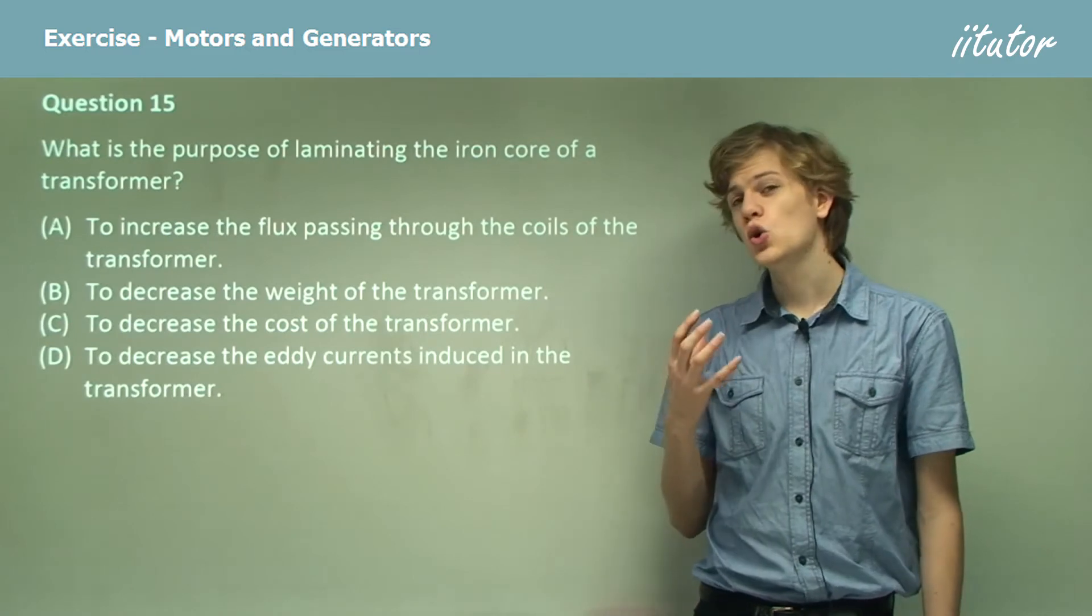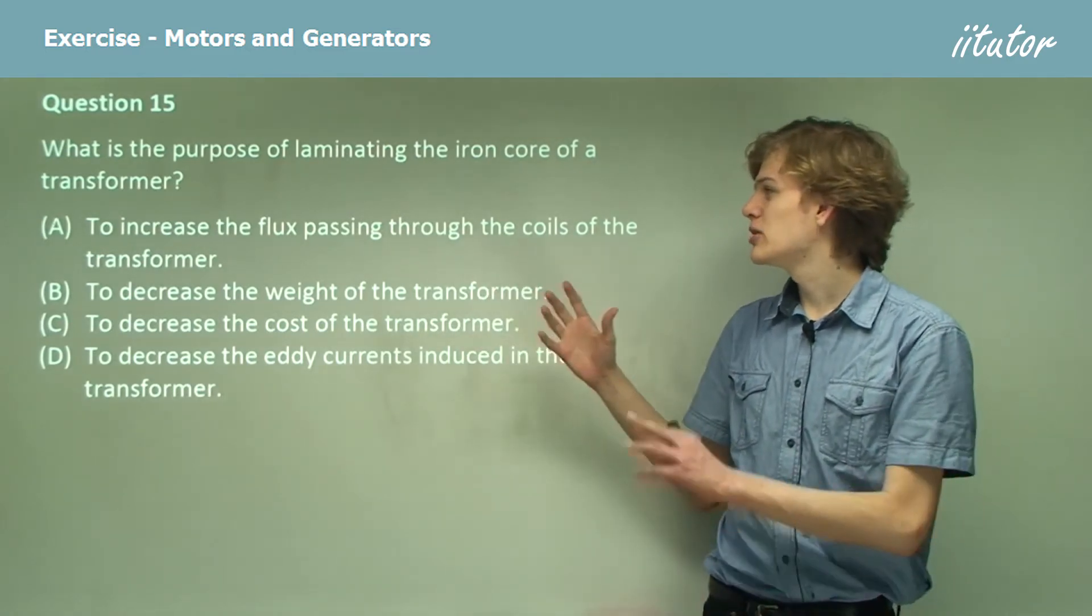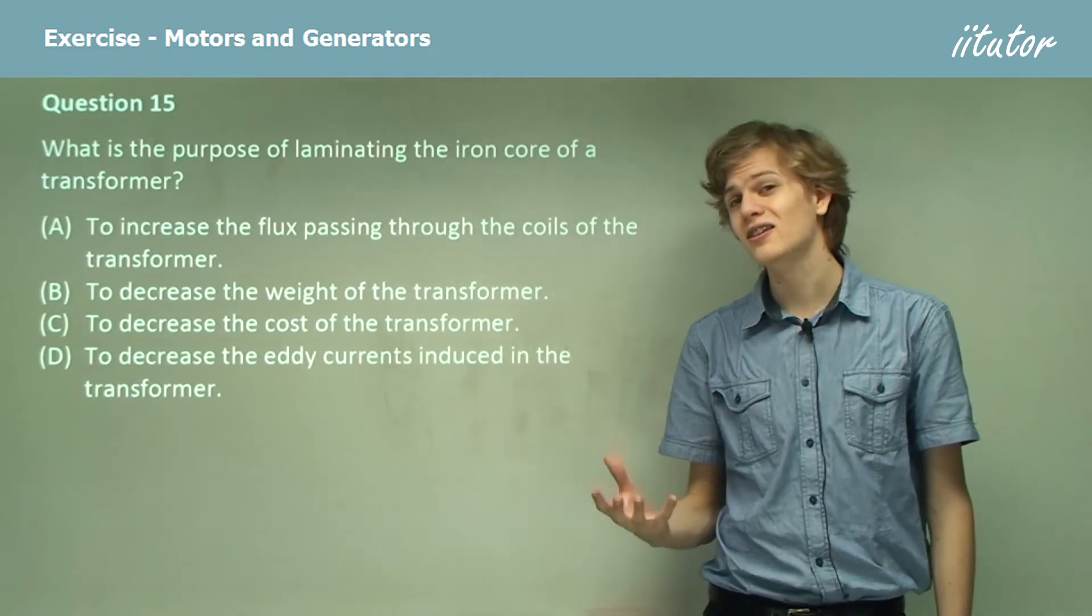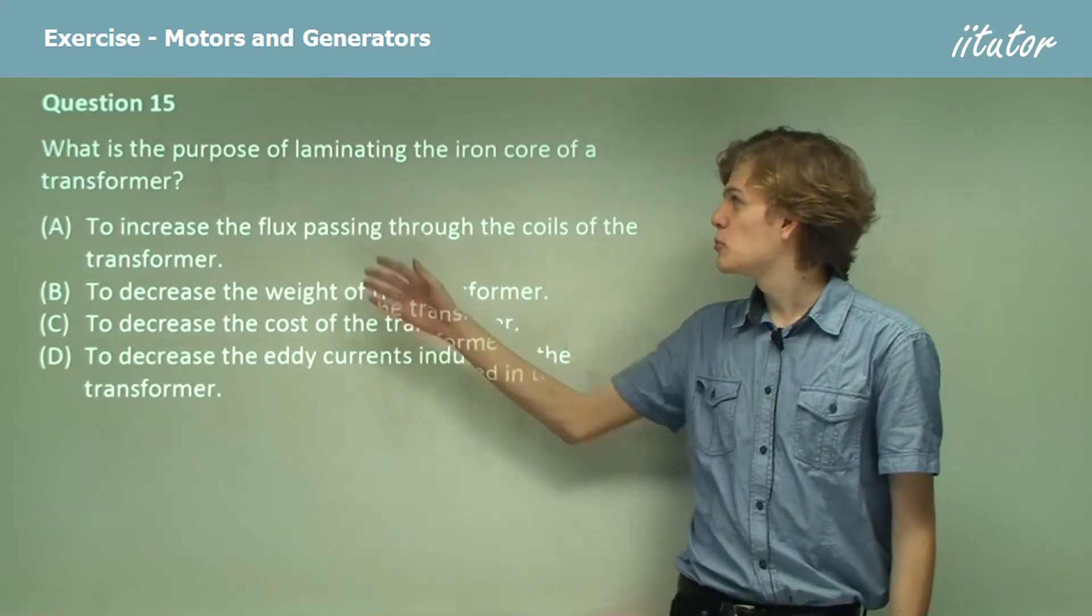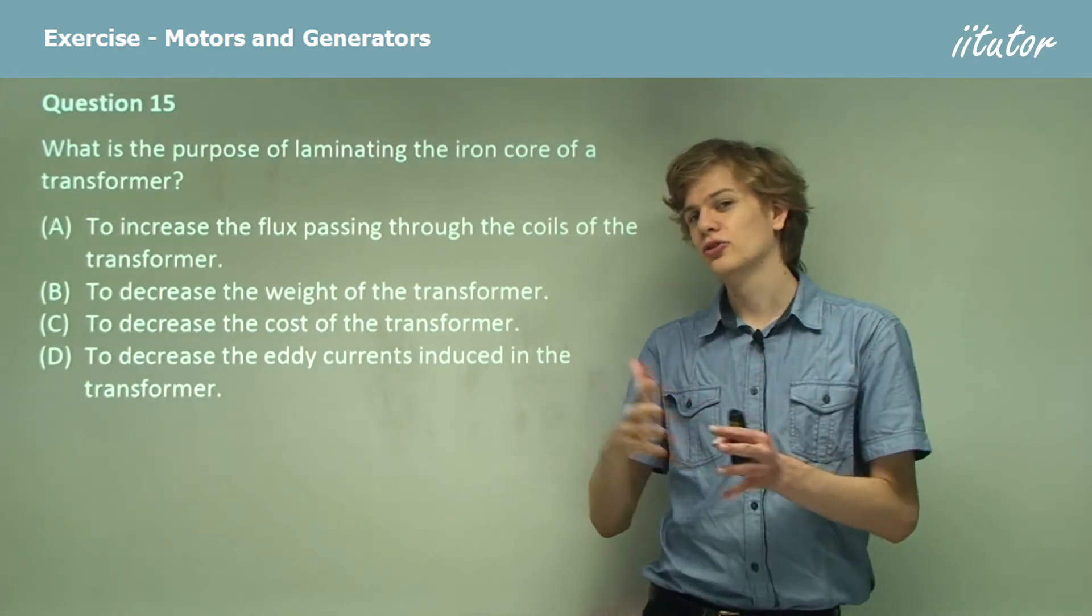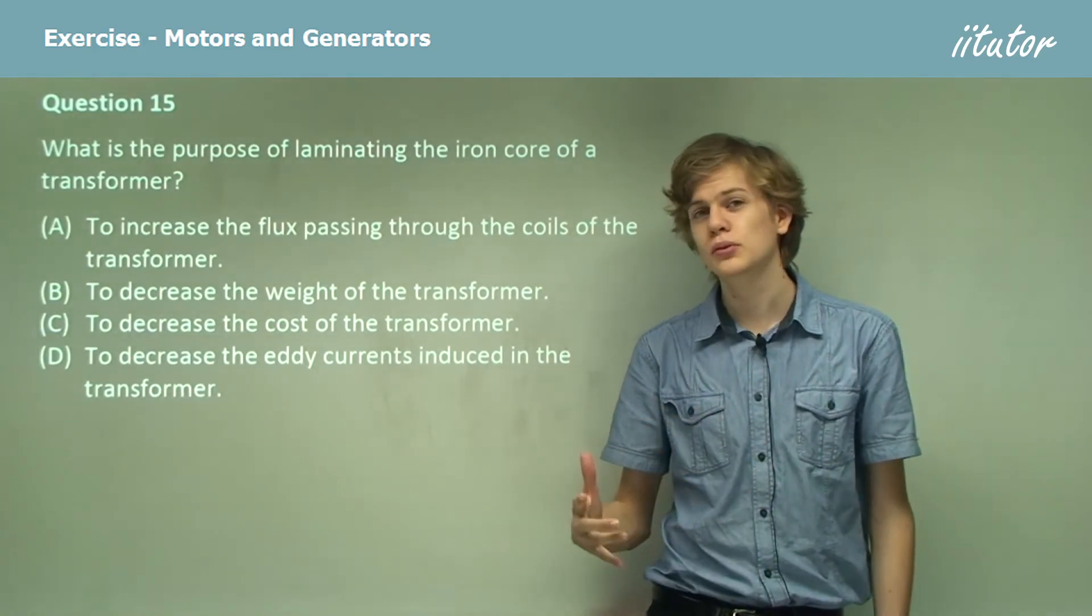Now, the purpose of the iron core itself is to increase the flux passing through the coils of the transformer. But that's not what the question is asking. It's saying, what is the purpose of laminating the iron core? That is, dividing it into lots of little slices and putting insulators between those slices.